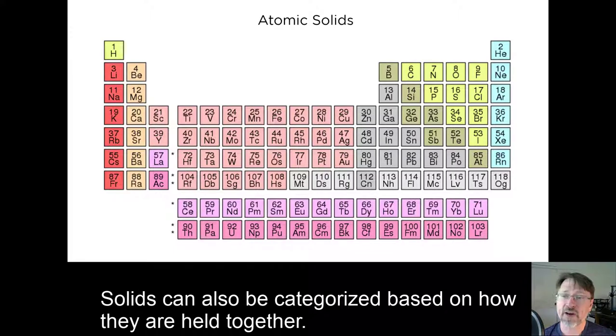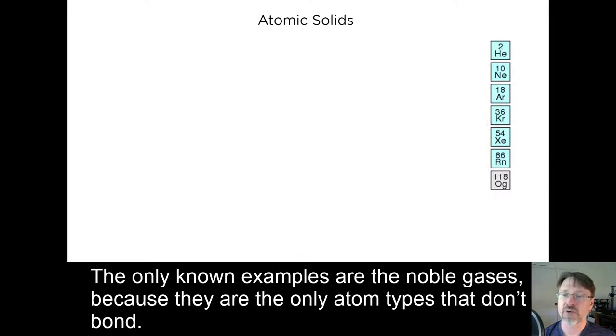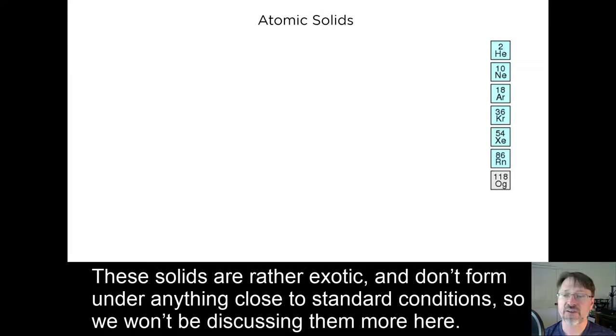Solids can also be categorized based on how they are held together. Atomic solids are individual atoms held together only by London dispersion forces. The only known examples are the noble gases, because they are the only atom types that don't bond. These solids are rather exotic and don't form under anything close to standard conditions, so we won't be discussing them more here.